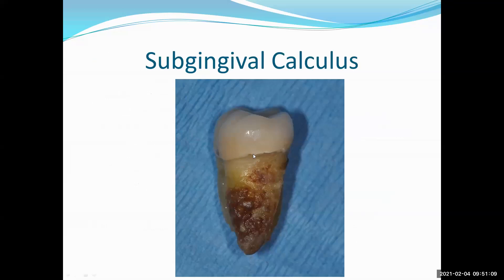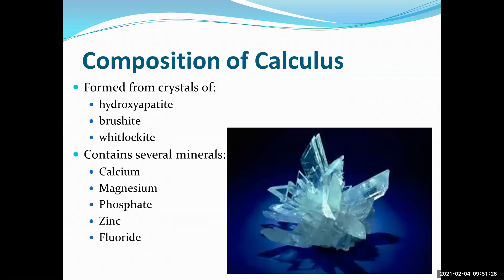Subgingival calculus — here's a porcelain crown at the CEJ. Things look pretty clean, but look at all that calculus that wasn't reachable. 60% calcified. Calculus is formed from crystals of hydroxyapatite — what else has hydroxyapatite? Your enamel. Also brushite and whitelockite. The minerals involved include calcium, phosphorus, magnesium, zinc, and even fluoride. Know the composition of calculus.